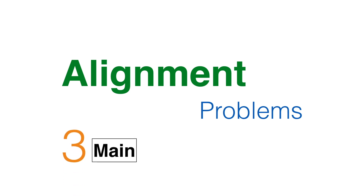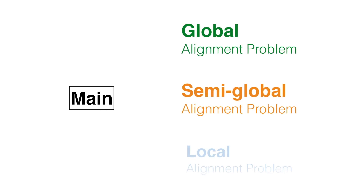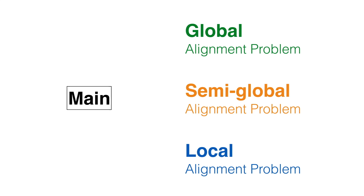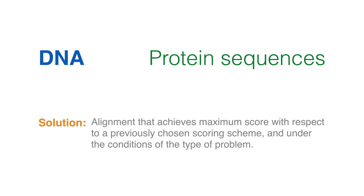There are three basic types of pairwise sequence similarities whose search is cast as the solution of three different pairwise sequence alignment problems. These are the global alignment problem, the semi-global alignment problem, and the local alignment problem. These problems apply both to DNA and protein sequences. A solution to either one of these problems is an alignment that achieves maximum score with respect to a previously chosen scoring scheme and under the conditions of the type of problem.